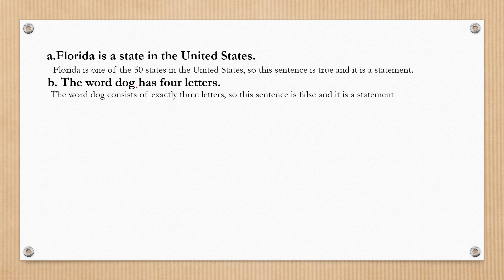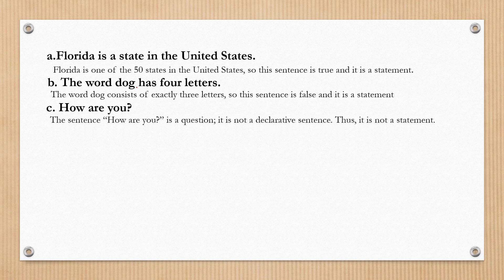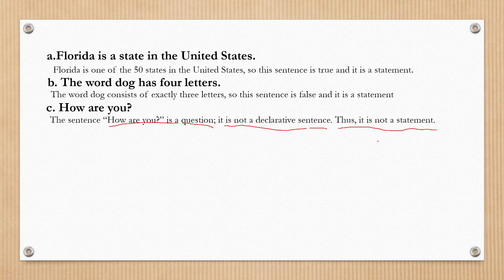Letter C: 'How are you?' The sentence 'How are you?' is a question — it is not a declarative sentence. Since we need a declarative sentence that is either true or false, a question does not qualify. Thus, it is not a statement.